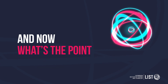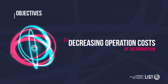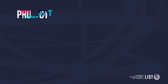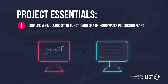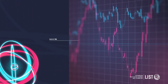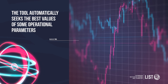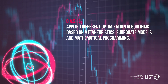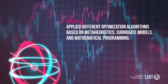What's the point with OASIS? The tool is optimized to reduce environmental impacts and to decrease operation costs. In this project, the approach consists in coupling a simulator of the functioning of a drinking water production plant with a multi-criteria optimizer. While staying in the realm of technically and economically feasible solutions, the OASIS tool automatically helps with the best decisions to minimize economic costs and environmental impacts. OASIS achieves these ideal values by applying different optimization algorithms based on meta-heuristics, surrogate models, and mathematical programming.